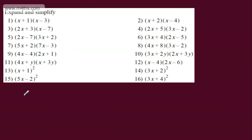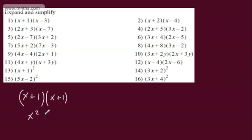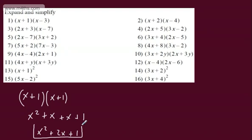x plus 1 all squared simply means x plus 1 multiplied by x plus 1. If you see the squared sign, we just have a repeated bracket. x times x gives us x squared. x times positive 1 gives us positive x. Then we get plus another x and then plus 1. So we have x squared plus 2x plus 1. As we can see, expanding is the opposite or reverse of factorising.